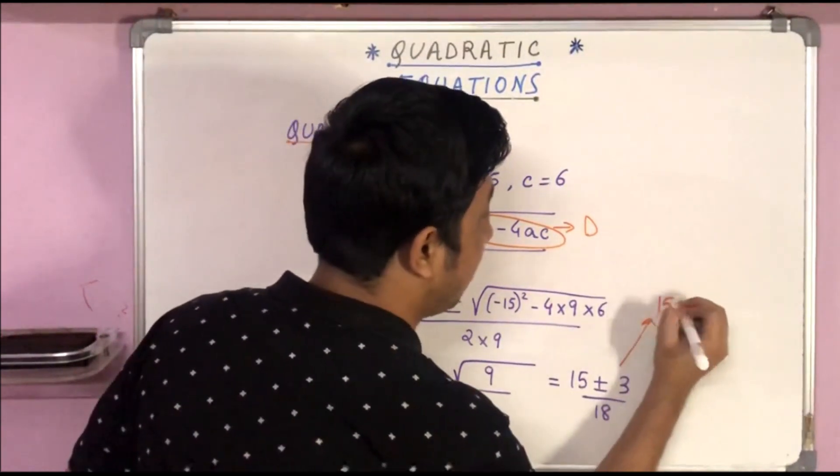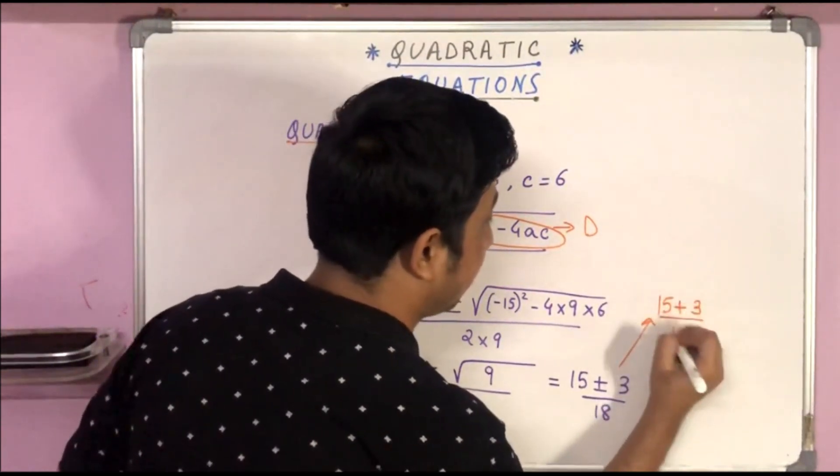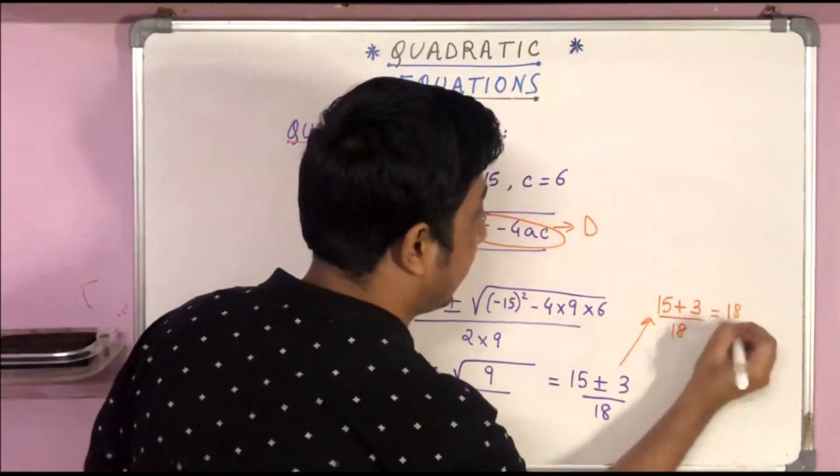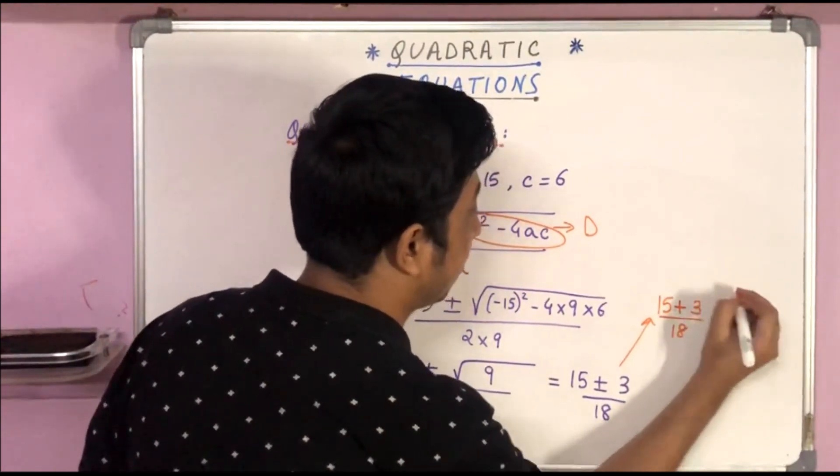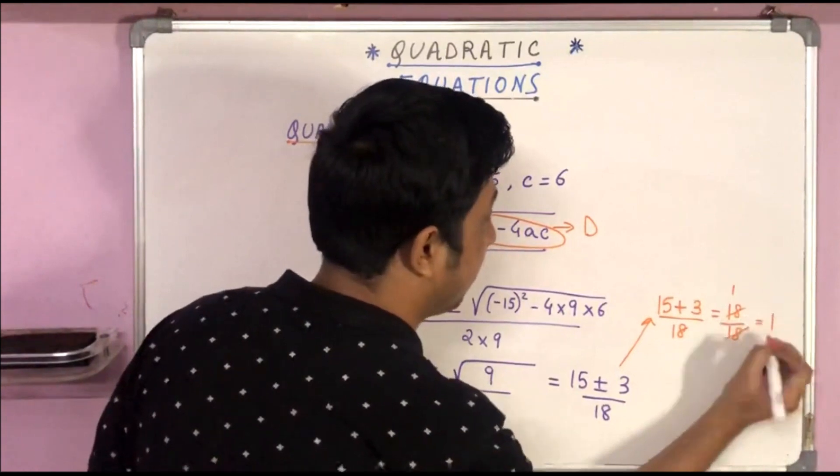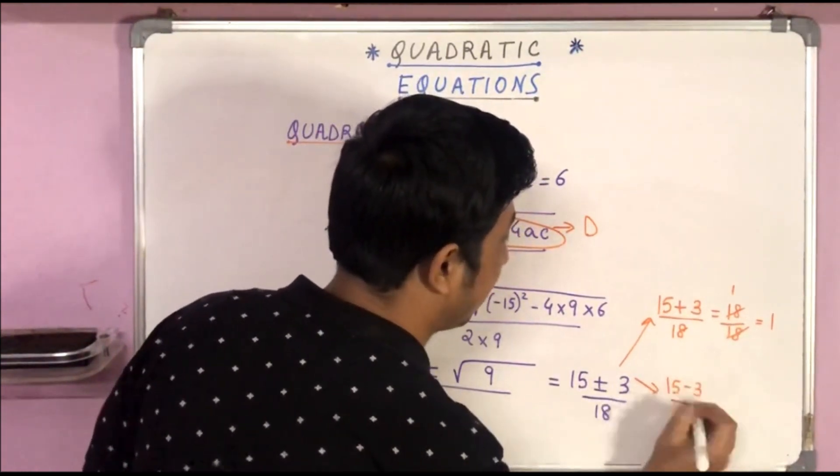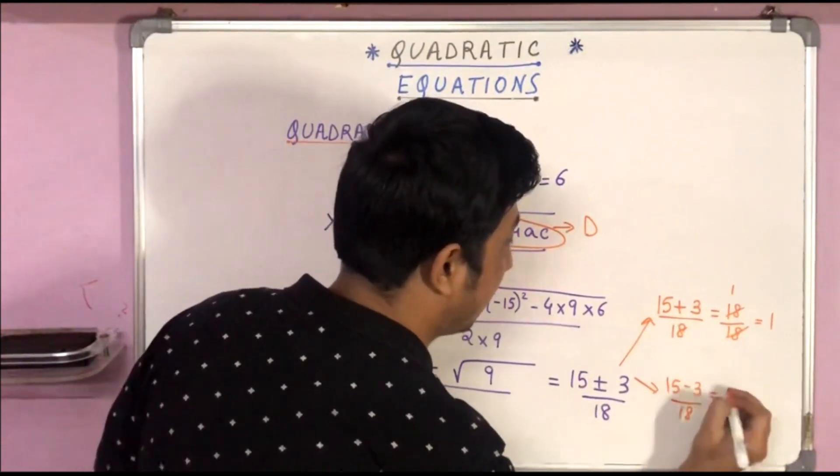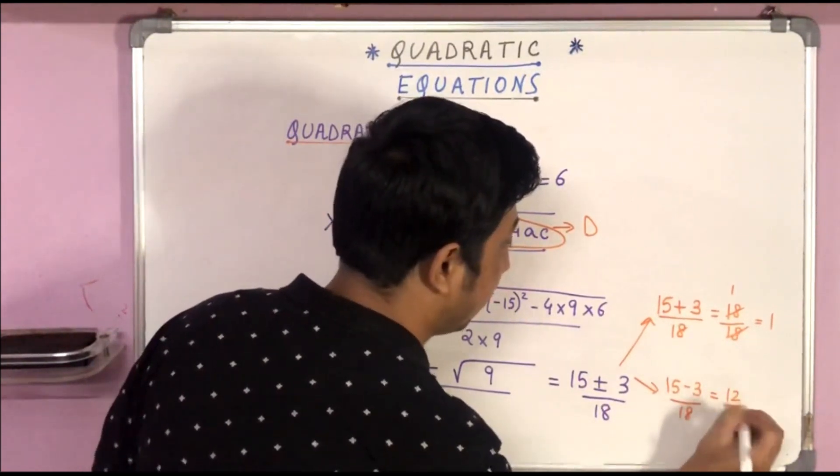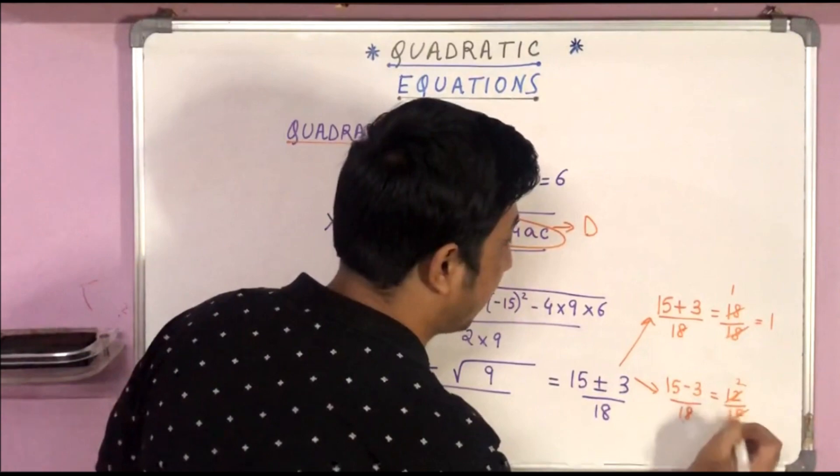So now from here we get two roots. One is (15 + 3)/18, that is equal to 18/18 = 1. And the other is (15 - 3)/18, that is nothing but 12/18, which is 2/3.